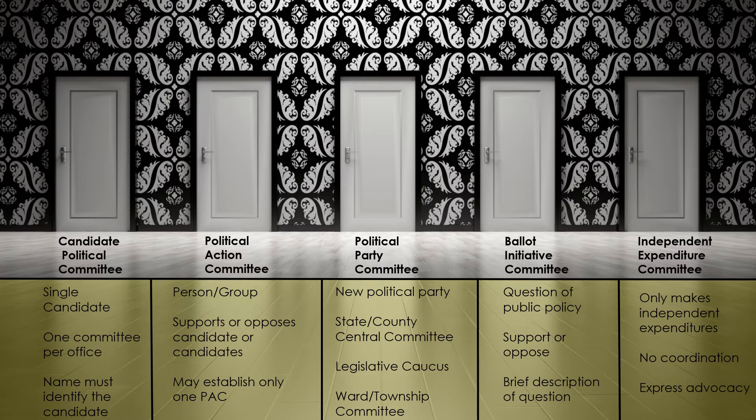The third committee type is a political party committee. A political party committee may be formed by a new political party, or the state or county central committee of a party, a legislative caucus committee, or by the ward or township committeeman of a political party. The name of a party committee must include the name of the political party that forms it. Each state, county, ward, or township group can only create one political party committee.